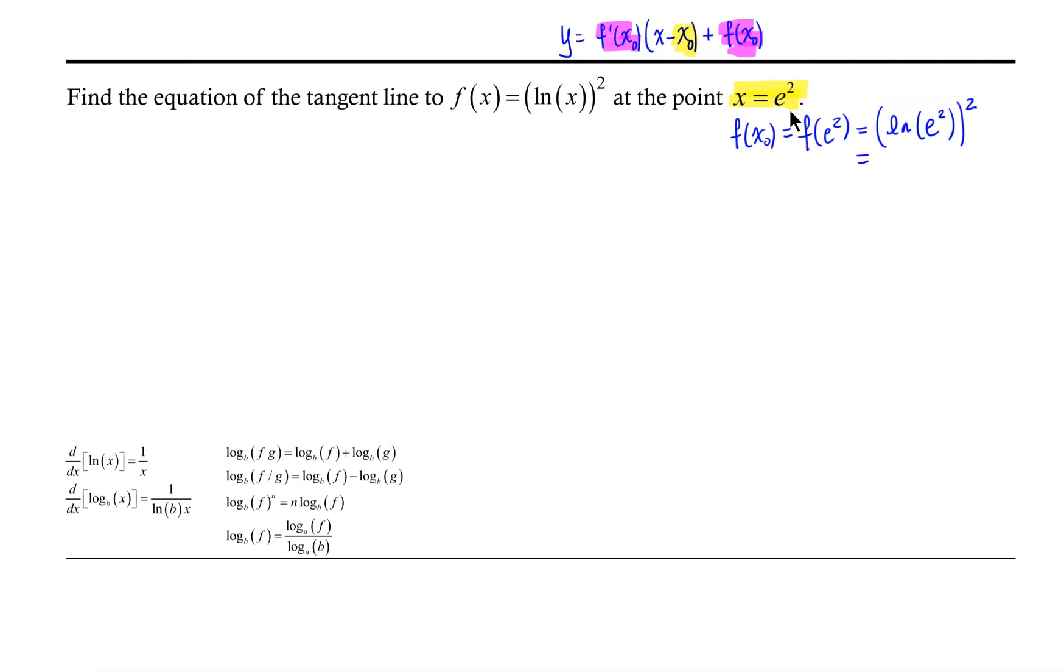Using the exponent rule for logarithms, that two for e² comes in front of the logarithm, so we have 2·ln(e) squared. The natural logarithm and exponential functions are inverses, so ln(e) is simply 1, giving us 2·(1)² which equals 4.